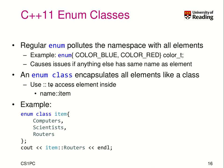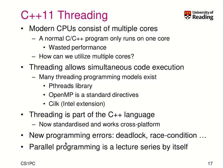With enum class, the idea is that it encapsulates all the elements like a class. Therefore you have to use a namespace with the colon colon operator to access the elements inside. For example, we create an enum class — note the 'class' keyword — and we call it 'item' with values computer_scientists and routers. To uniquely identify item::routers, we use the namespace 'item' followed by '::routers'. This gets rid of the underscore prefix and uses the full features of namespaces in C++.